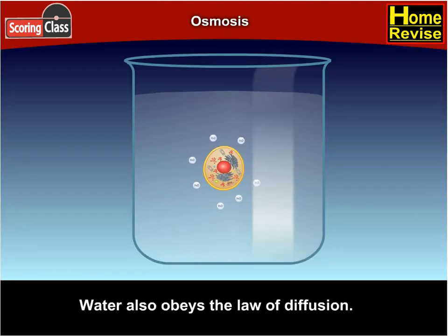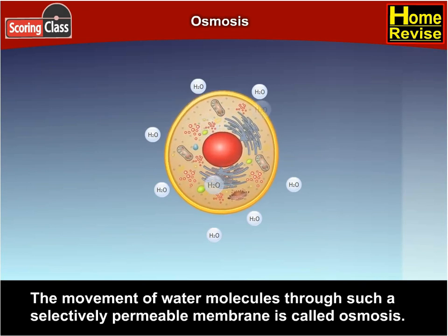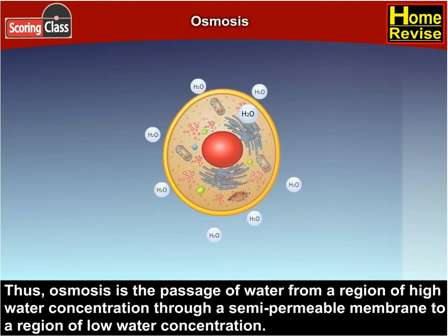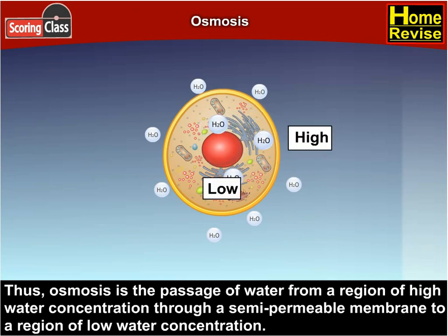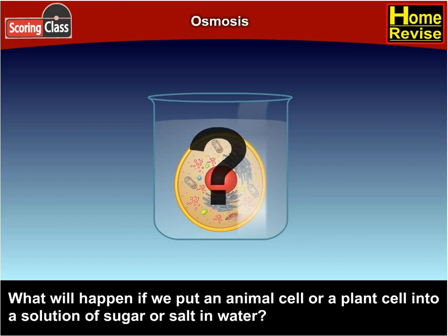Osmosis — water also obeys the law of diffusion. The movement of water molecules through a selectively permeable membrane is called osmosis. Thus, osmosis is the passage of water from a region of high water concentration through a semi-permeable membrane to a region of low water concentration.